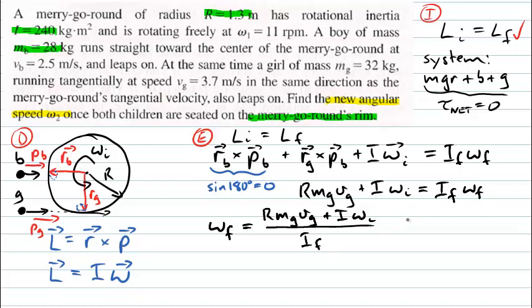Most of these numbers are known, but we need to calculate the final rotational inertia of the merry-go-round plus the children sitting on the rim. It must be the rotational inertia of the merry-go-round, plus the mass of the boy multiplied by the square of his distance from the axis (r²), plus the mass of the girl multiplied by the square of her distance from the axis (r²), since both are located at the rim.